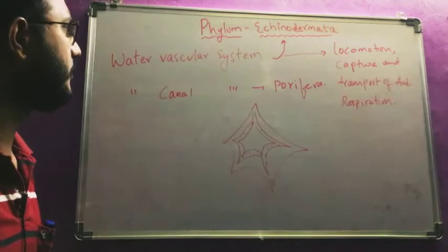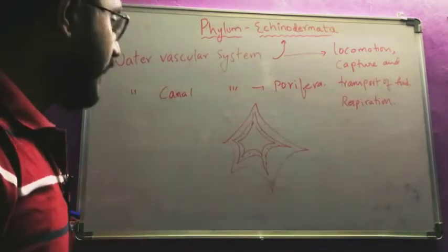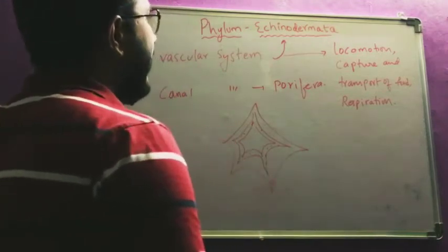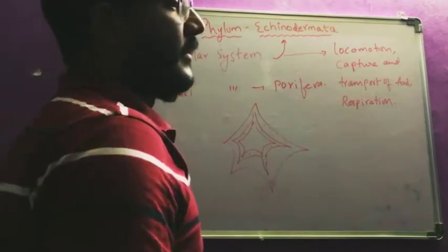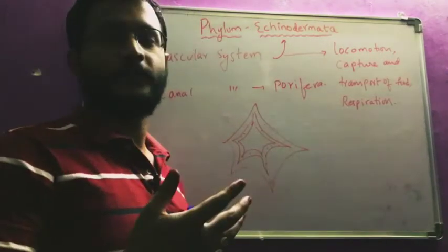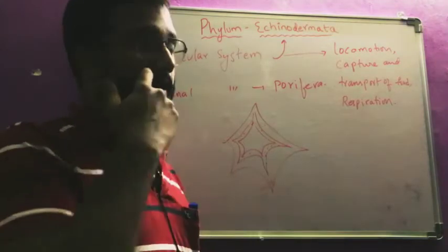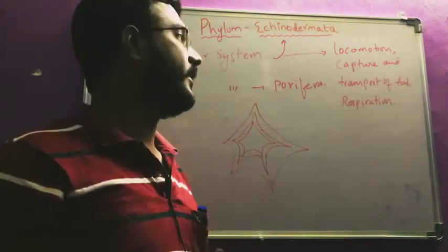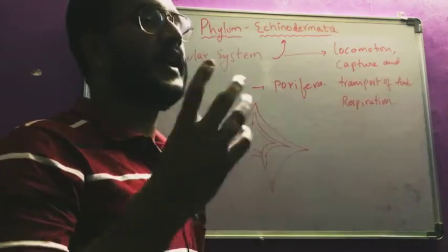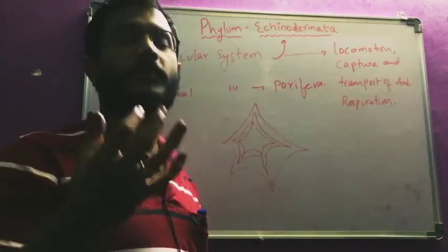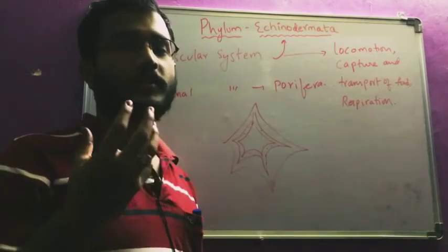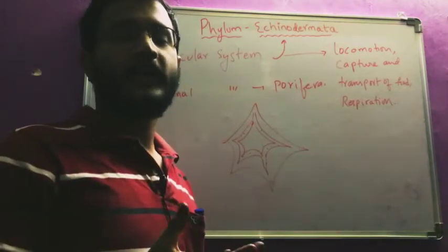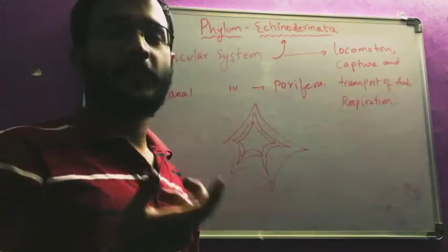The meaning of Echinodermata: 'derma' means skin or the outside body, and 'Echino' means spiny — the spiny body. That means the outer body is made up of calcium carbonate or silicon dioxide spicules, as a result of which the outer body looks like a spine and is hard.